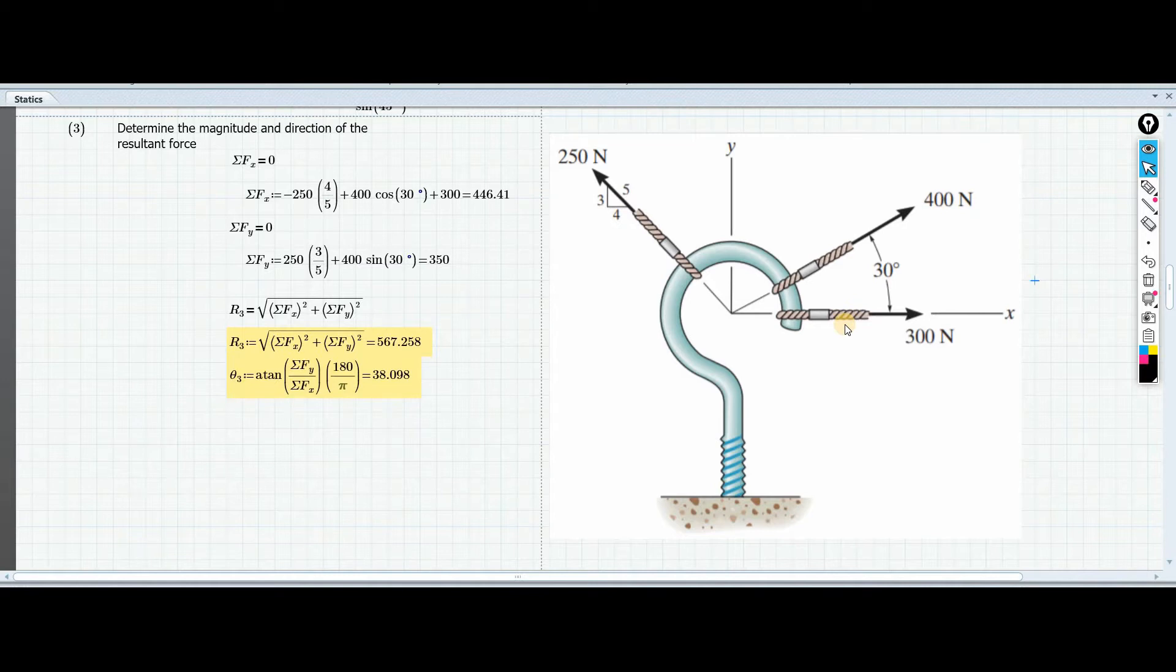If you can still remember our lesson on vector components, that's what we're going to use now. So let us observe this screw. It is acted upon by three forces. We have this 300 Newton here, we have the 400 Newton at 30 degrees from the x-axis, and we have the 250. The slope given is rise of 3 and run of 4.